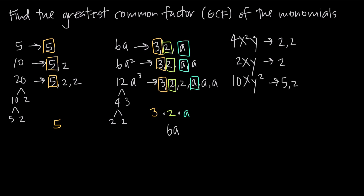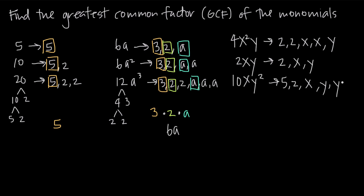Then we look at our x's. We have x squared, x, and x. We can break down x squared into x and x, but we can't break down x any further, so we just have x and x. Then for y — we can't break that down at all here, and can't break it down here either. For y squared, we can break that into y and y.